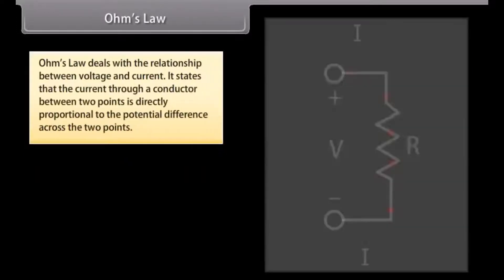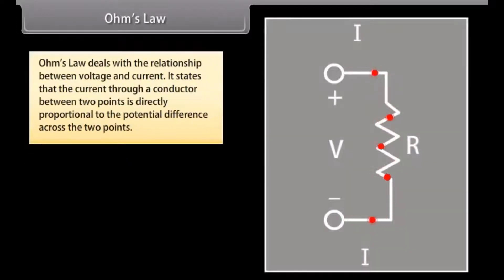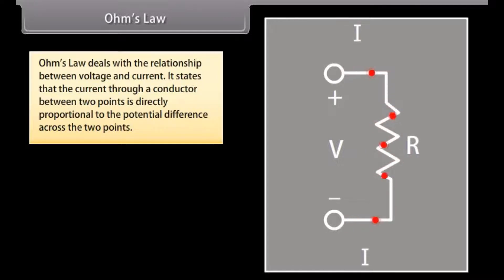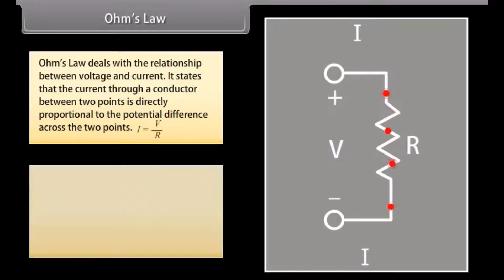Ohm's Law deals with the relationship between voltage and current. It states that the current through a conductor between two points is directly proportional to the potential difference across the two points.